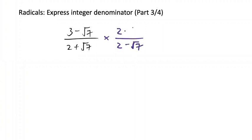So 2 minus root 7. And the bottom, the denominator, is obviously difference of squares, so 4 minus 7. And the top...